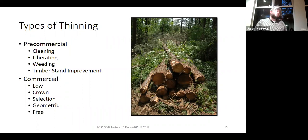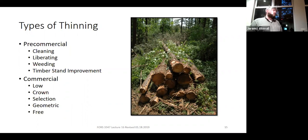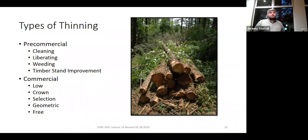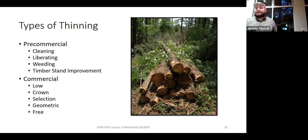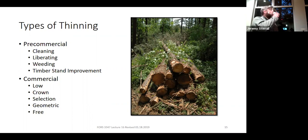Now let's look at the different types of thinning. We have two broad categories: pre-commercial and commercial thinning. You could apply any of the commercial methods as pre-commercial under certain circumstances, but the commercial methods usually do involve removing trees. The pre-commercial thinning options—cleaning, liberating, weeding, and timber stand improvement—have very specific definitions that basically mean you're definitely not removing anything of commercial value. With timber stand improvement, occasionally you can have it be commercial if you have a market for the less desirable trees you're removing.